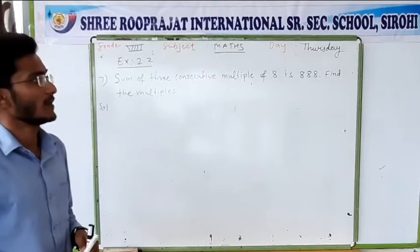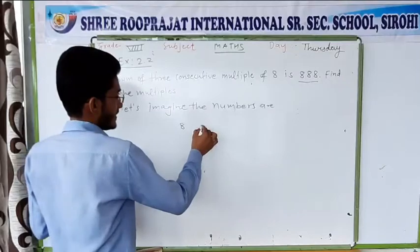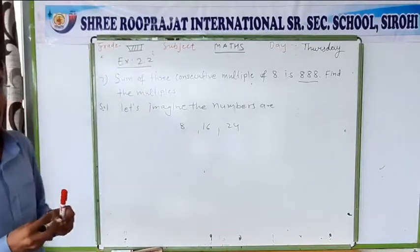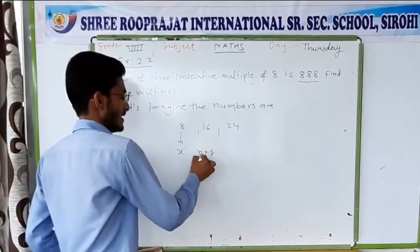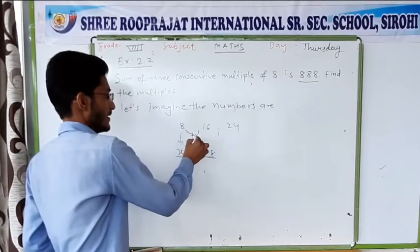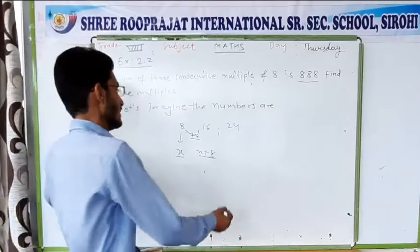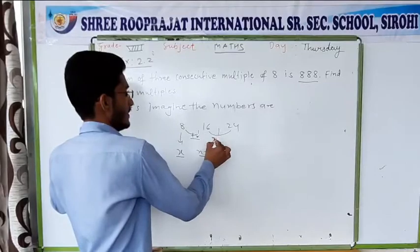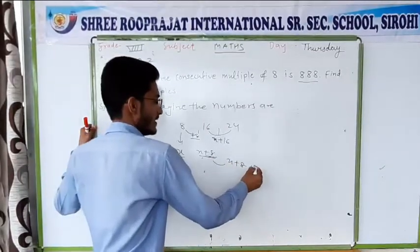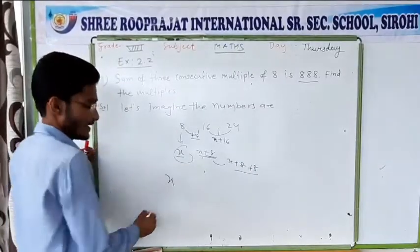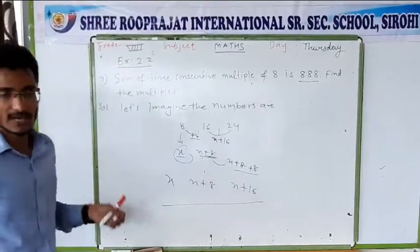Question 7: the sum of 3 consecutive multiples of 8 is 888. The multiples of 8 are 8, 16, 24 — these are consecutive multiples. Suppose the first multiple is x. To get the second multiple, we add 8 to the first number. For the third multiple, we add 16 to the first number, or add 8 more to the second. So the three multiples are x, x plus 8, and x plus 16.